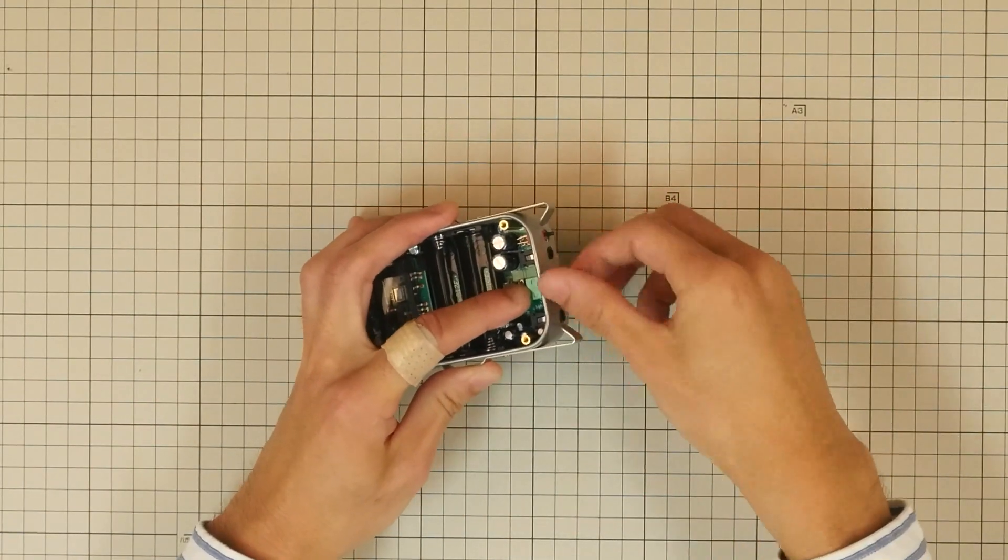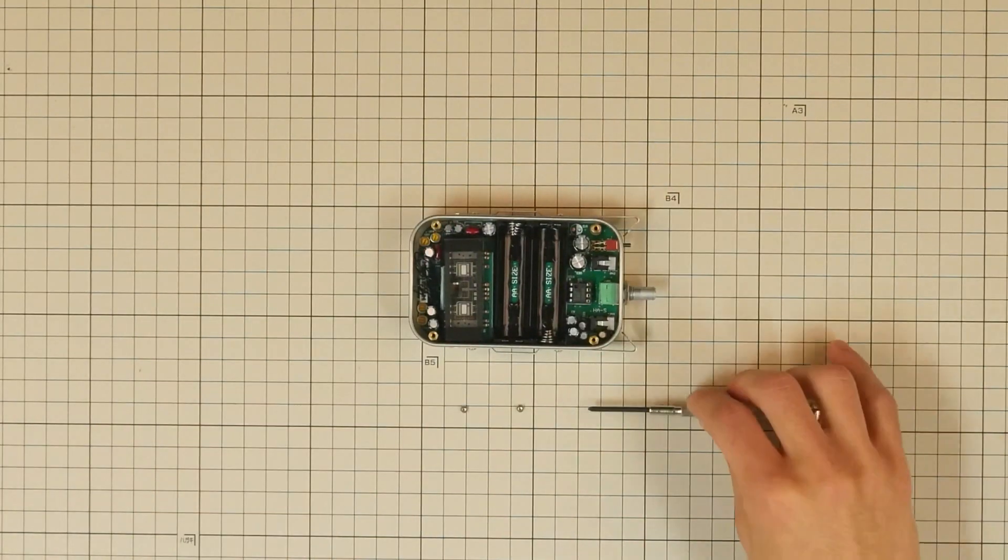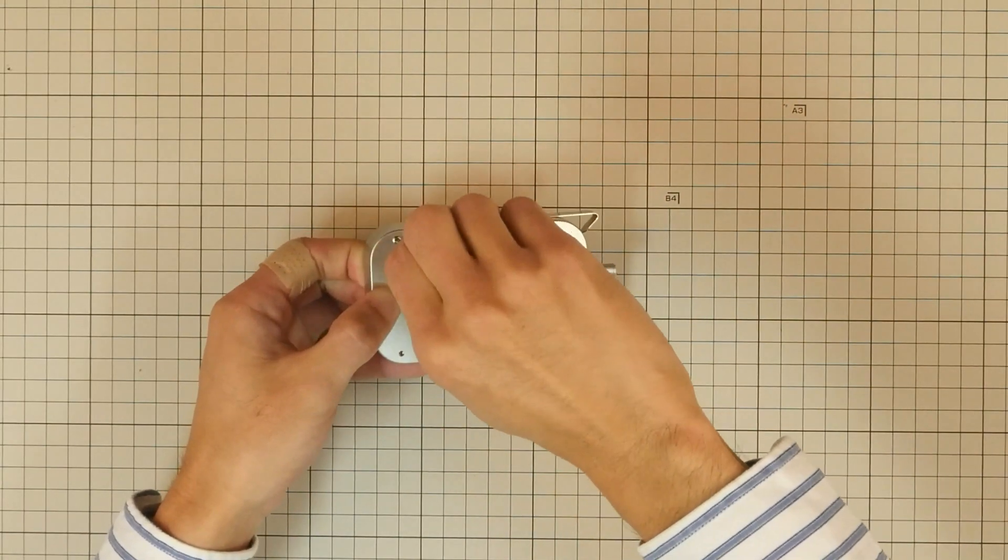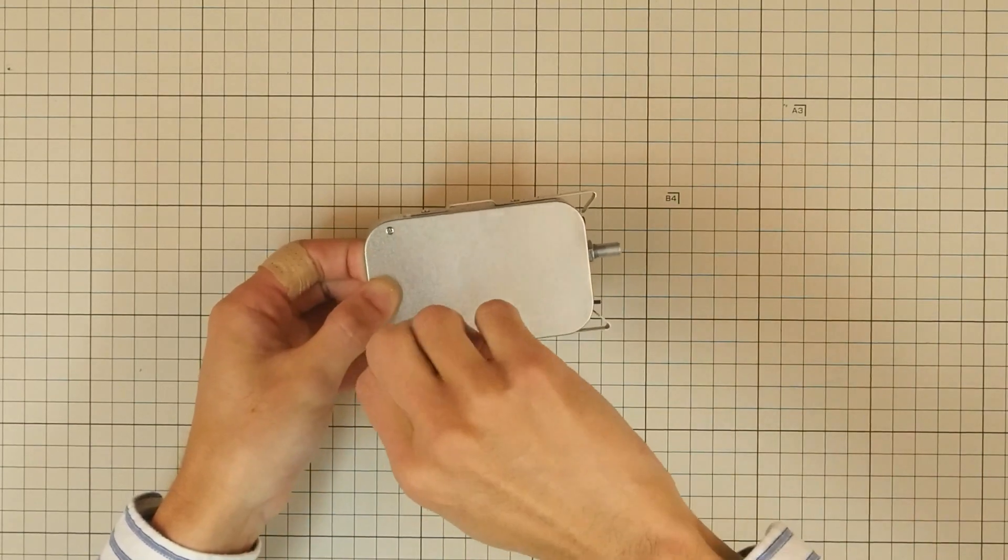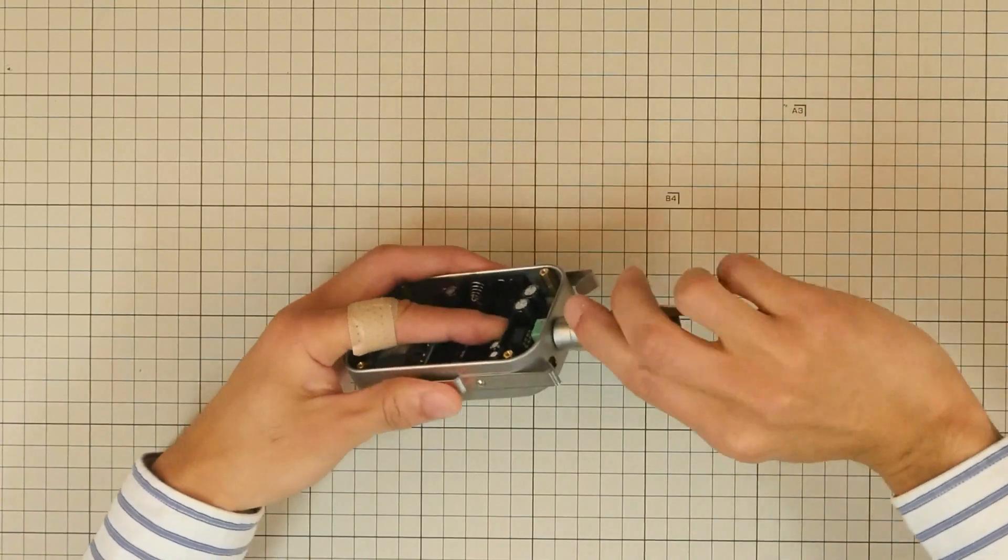After mounting, attach the washer to the volume and then use the volume nut to temporarily tighten the volume onto the case. Fix the main circuit board in place by using two small silver screws into the two holes at the bottom of the case. When that's done, re-tighten the volume nut to affix the volume permanently.